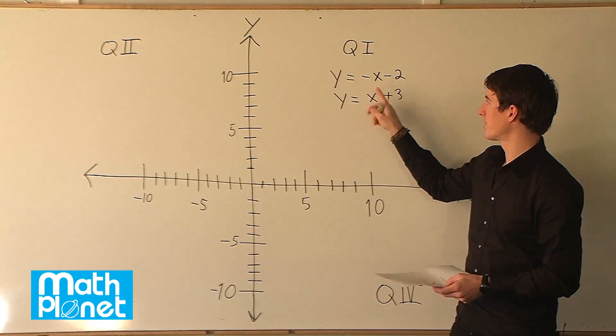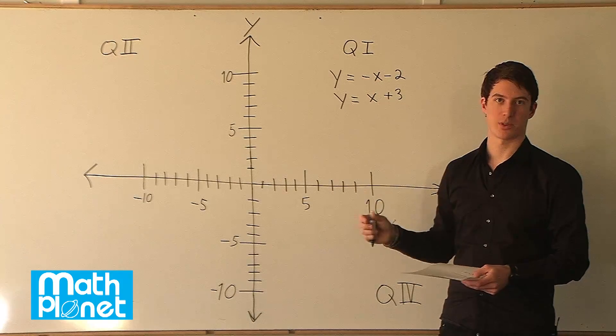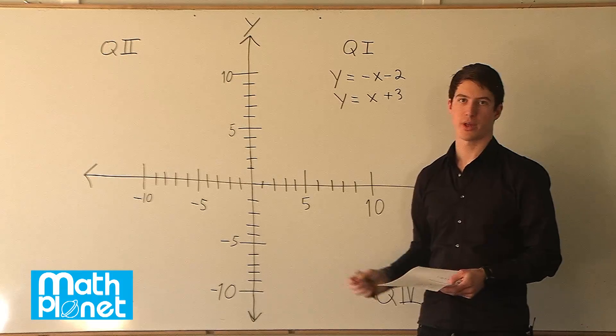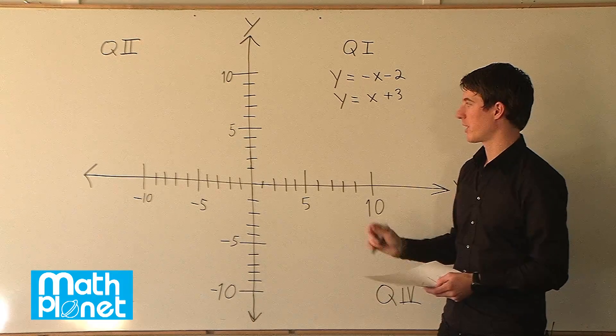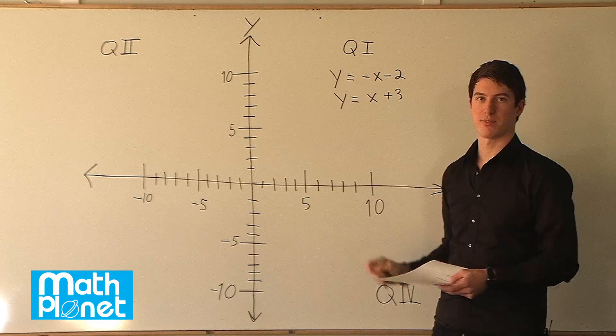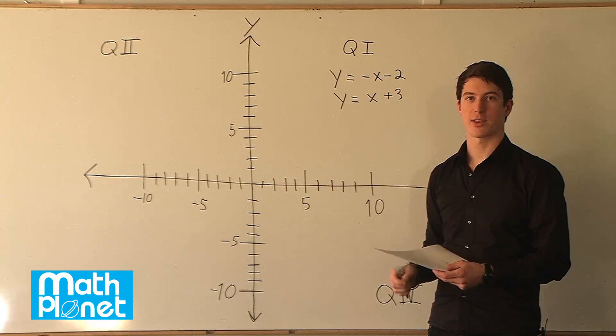So what we want to find is x equals something and y equals something. What that means when you graph it is what point do the two lines intersect? And that will be our answer, that will be our x and our y. So let's just graph each of these individually and see where they intersect and that will be our answer.